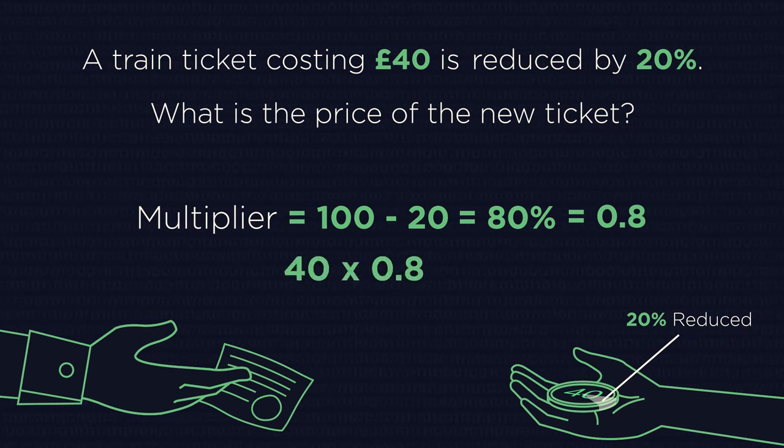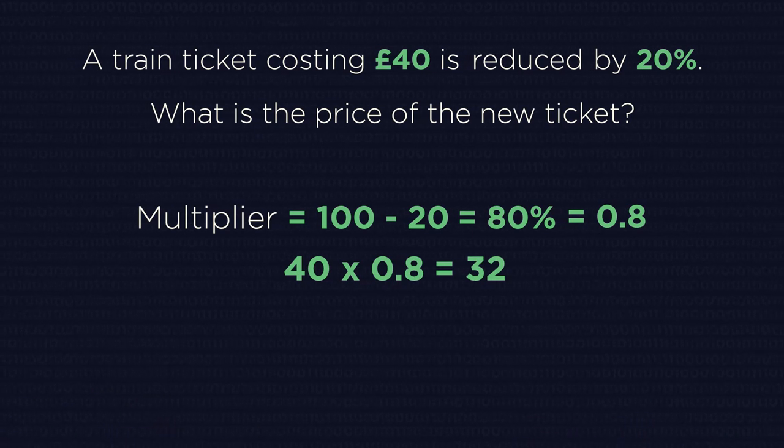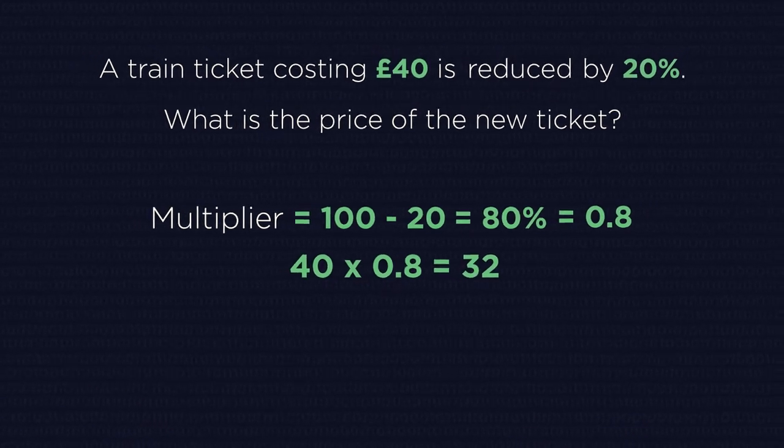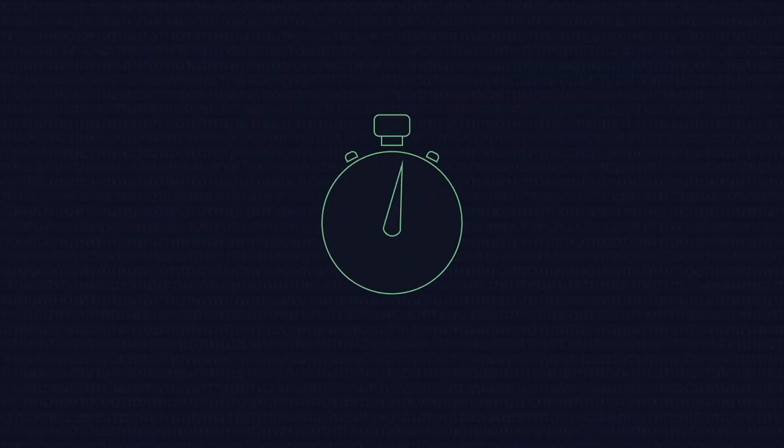So 40 multiplied by 0.8 equals 32. See how quick and easy these calculations are.